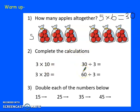Complete these calculations. 3 times 10 equals 30. 3 times 20, so if we know what 3 times 2 is, which is 6, we know that 20 is 10 times more than 2. So we need to make 6 ten times more and that would make 60.